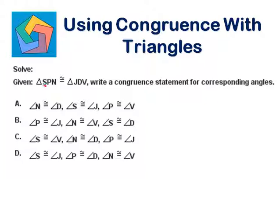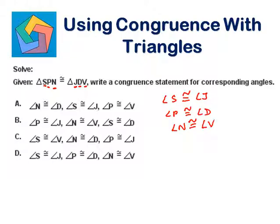S corresponds to J, so angle S should be congruent to angle J. P corresponds to D, so angle P should be congruent to angle D. N corresponds to V, so angle N should be congruent to angle V. This is the answer we can see in the D part, so we can highlight our answer.